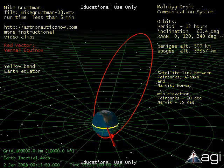The red vector facing you is the vernal equinox vector. The sun is on the left illuminating the Earth. The yellow band on the surface is the equator.